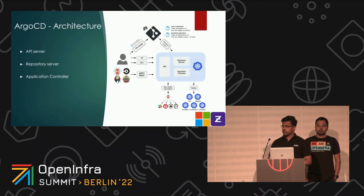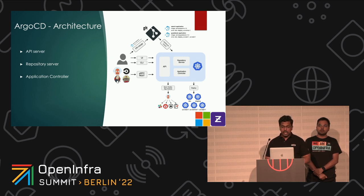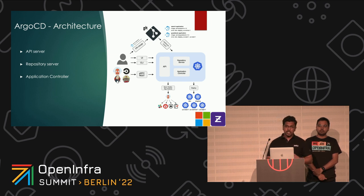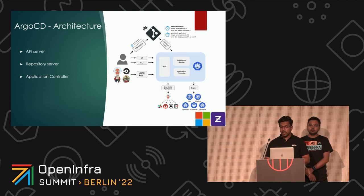Let's look at the architecture. There are three major components: API server, repository server, and the application controller. The API server is a gRPC or REST server that exposes the API consumed by the web UI, CLI, and CI/CD systems. It handles application management and status reporting, invokes operations such as sync and rollback, manages repository and cluster credentials stored as Kubernetes secrets, handles authentication delegation, RBAC enforcement, and can act as a listener for Git webhook events.